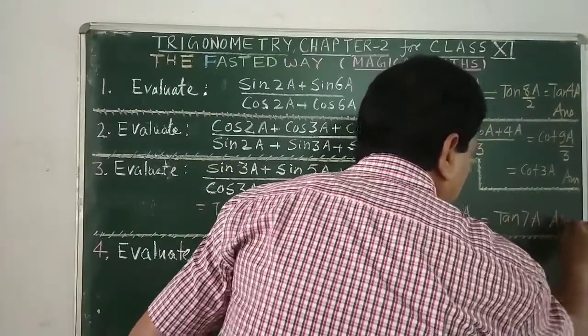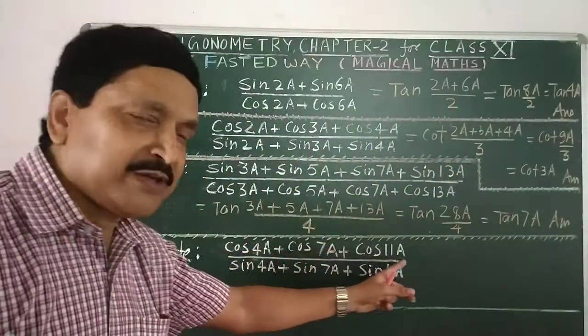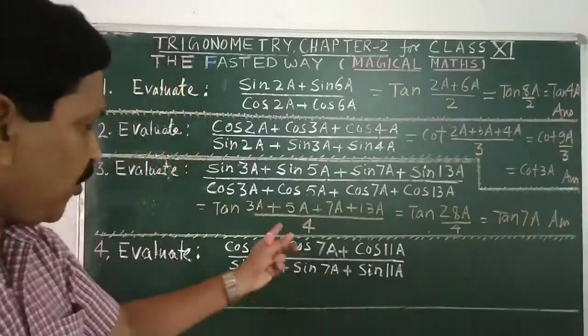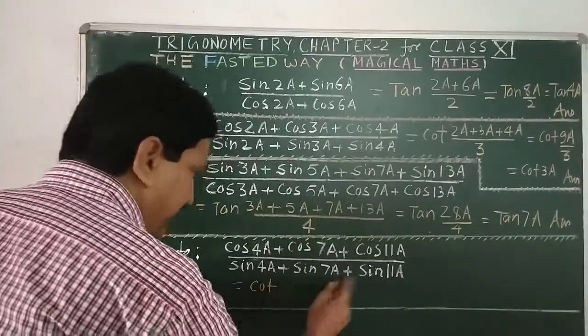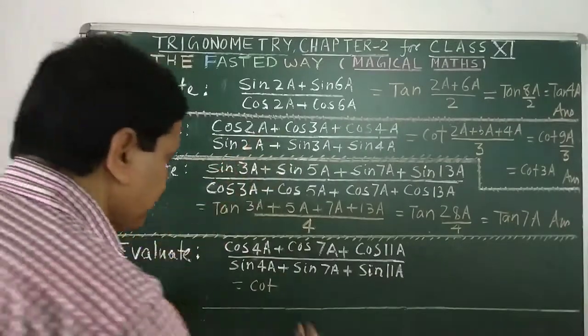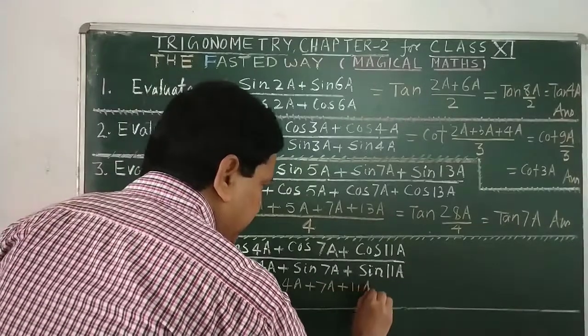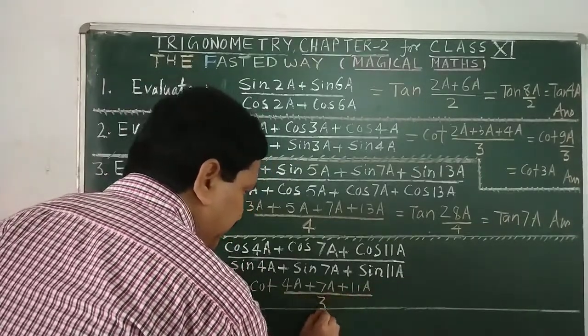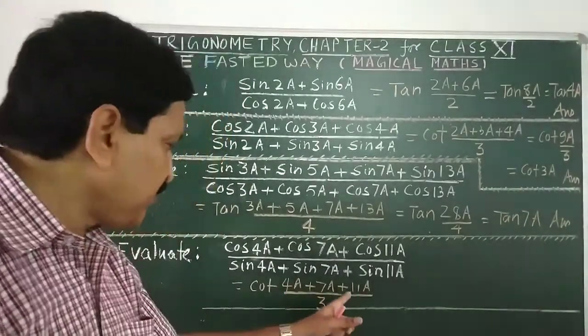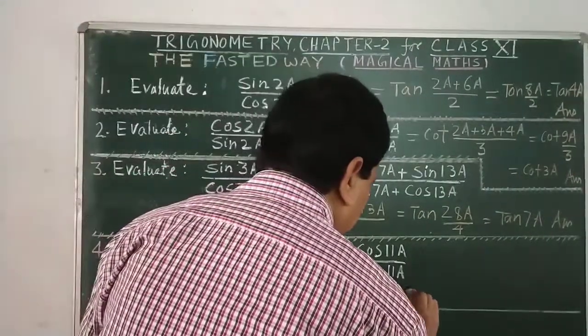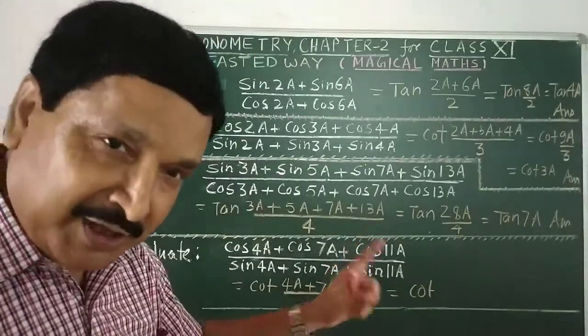So just see how fast I am writing the answer. Now this cos cos cos everywhere, sin sin sin everywhere. So cos by sin is called cot. So once more your answer is cot, add all the three angles, 4A plus 7A plus 11A divided by 3. Now see, 4A plus 7A is 11A, 11A plus 11A, 22A by 3. So cot 22A by 3.